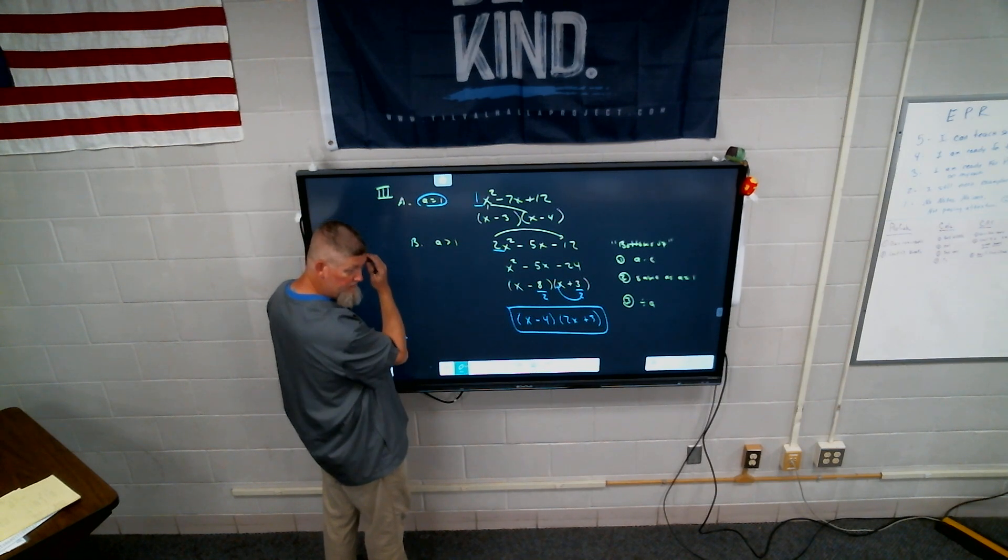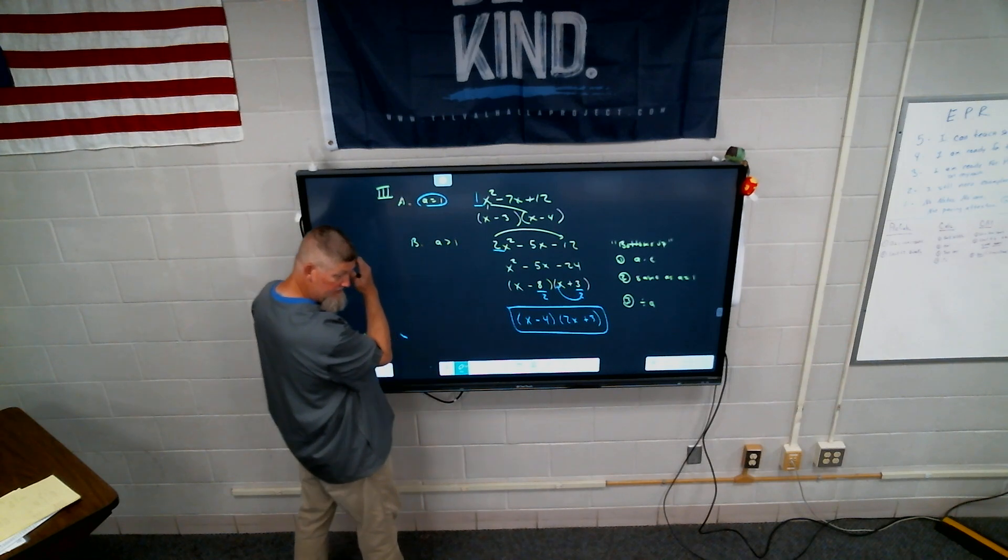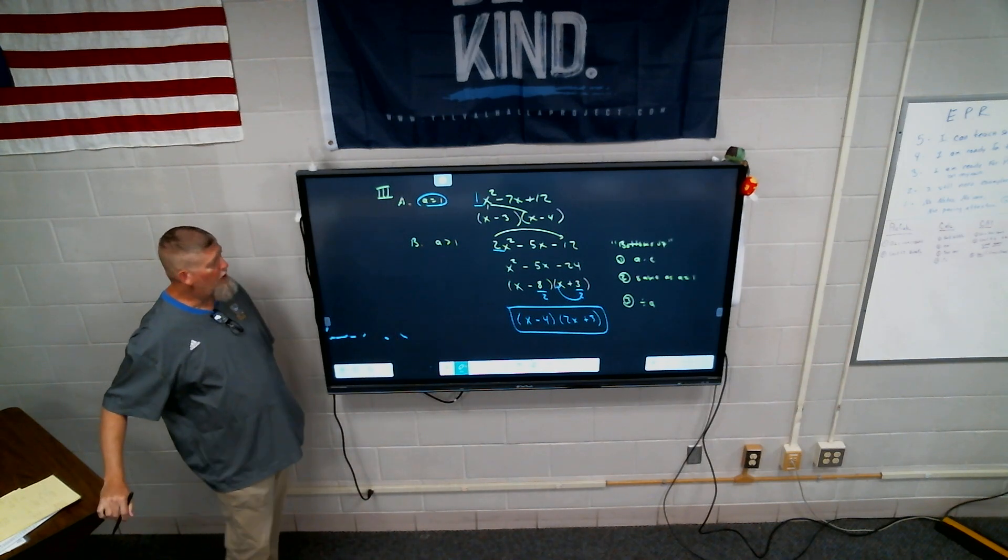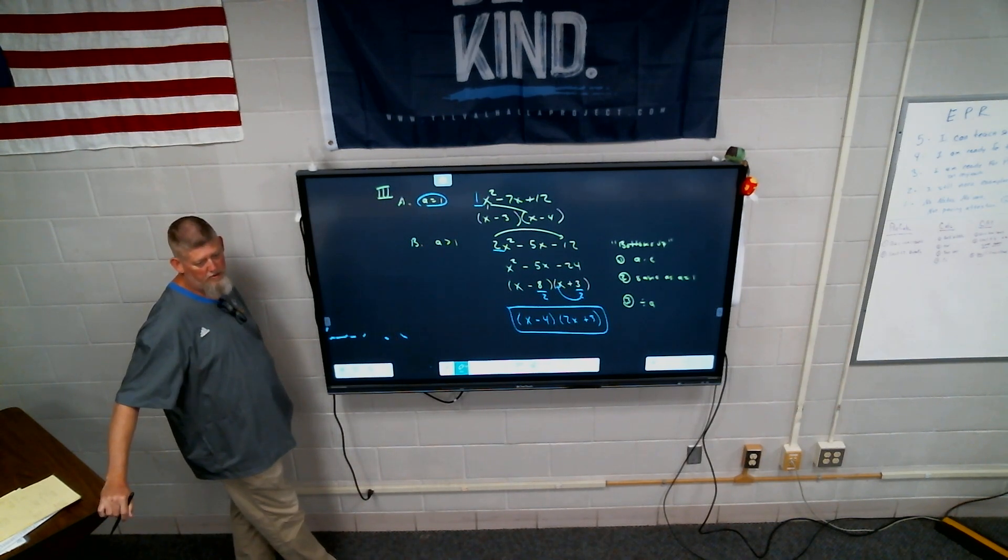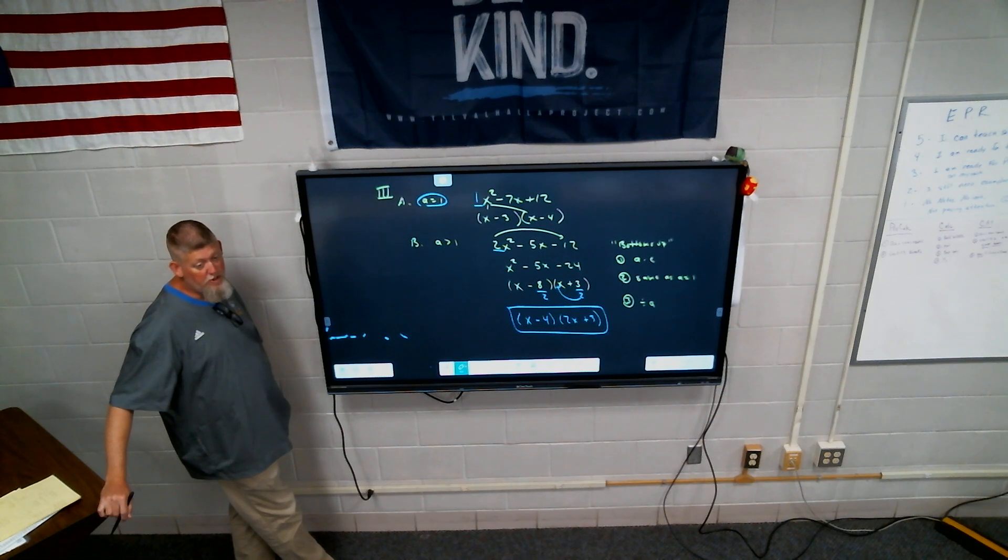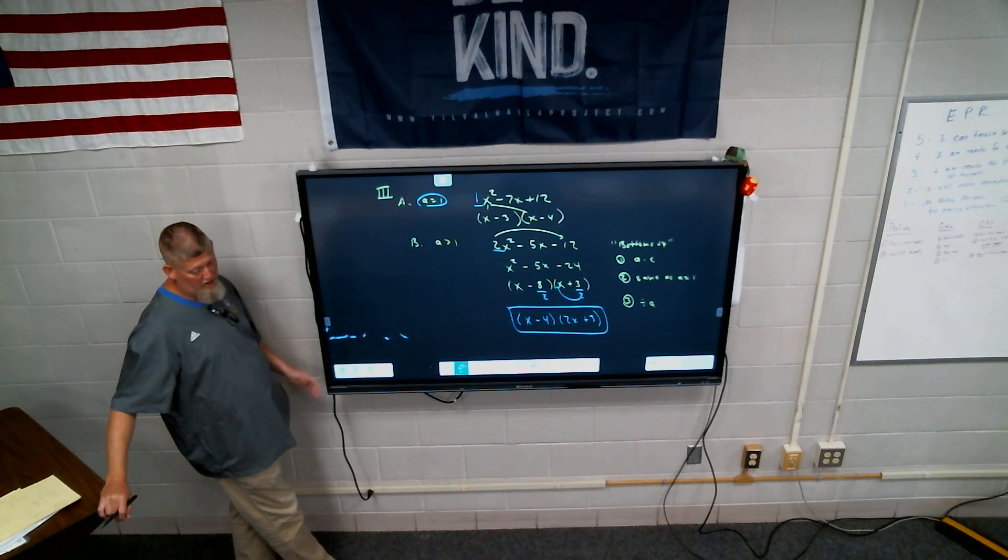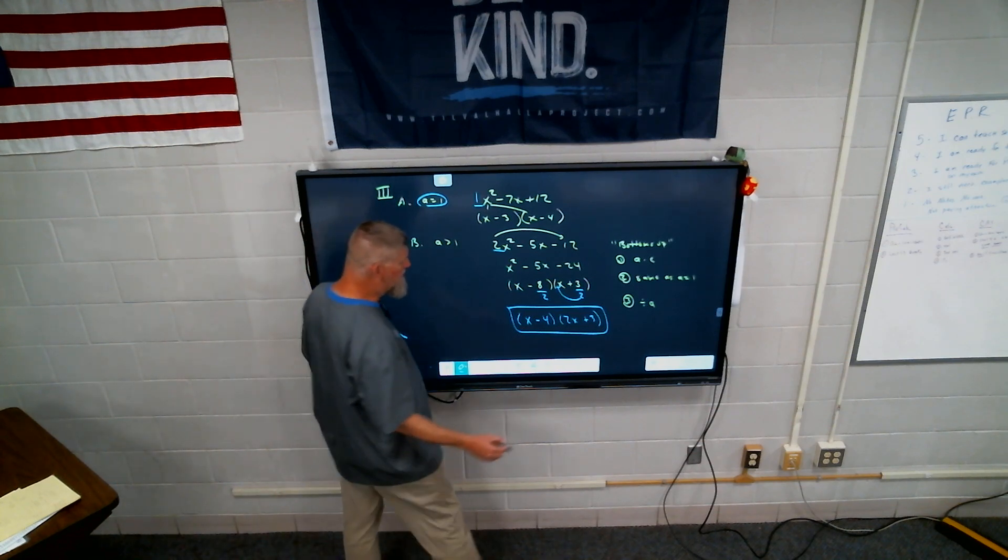Here, a equals one because the number in front of x squared is a one. So if I'm like, on like a quiz or a test, is it going to say like solve a equals one? It's going to say factor the trinomial. Or it'll just say factor. In fact, most of the time it'll just say factor the following. And I won't tell you what tool to use. You've got to figure it out. Is it two terms, three terms, or four terms? And go from there.